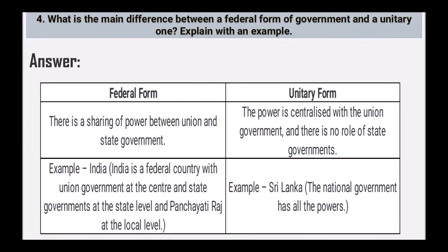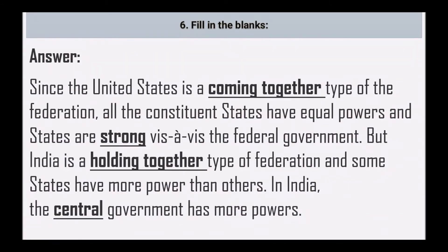Next, what is the main difference between a federal form of government and a unitary one? In a federal form, power is shared between the Union and state governments. In a unitary form, power is centralized with the Union government and there is no role for state governments. Example — India is a federal country with the Union government at the centre, state governments at the state level, and Panchayati Raj at the local level. Sri Lanka is an example of a unitary country where the national government has all the powers.